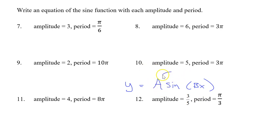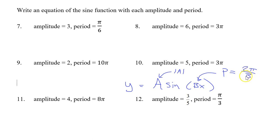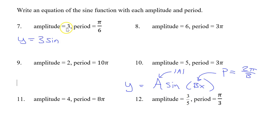The a value is going to tell us the amplitude — the amplitude will just be the absolute value of a. But the b value is going to give us the period using this equation: the period is going to be 2 pi divided by b. So if I want an equation that has an amplitude of 3, I could say y equals 3 sine of whatever comes next.